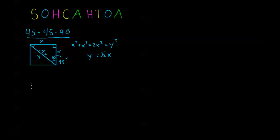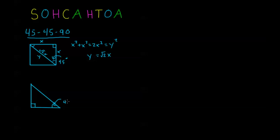Now I want to do a specific example of this triangle that's helpful for finding the values of sine, cosine, and tangent for the 45-degree angle — which is the same as π/4 radians. Let's take the triangle where each of the two legs equals 1; then the hypotenuse is √2 · 1, which is just √2. If we can remember this triangle, it's very easy to recall trig values at π/4 using SOHCAHTOA.